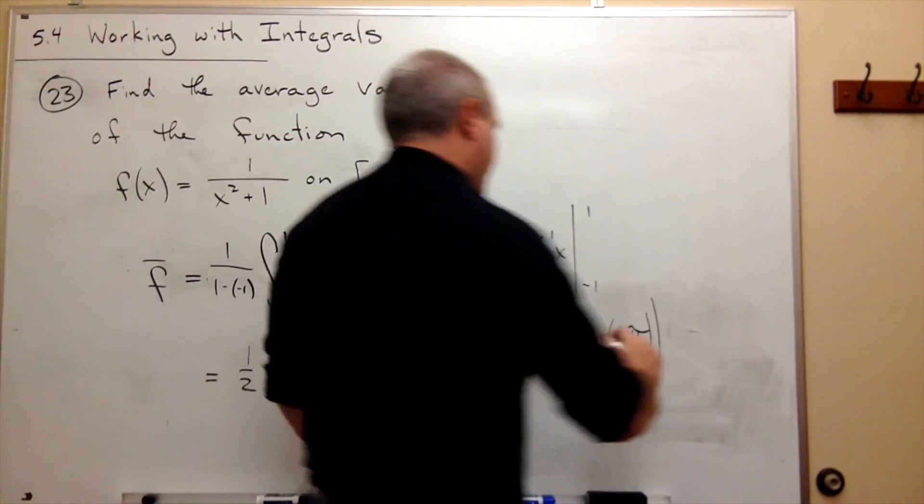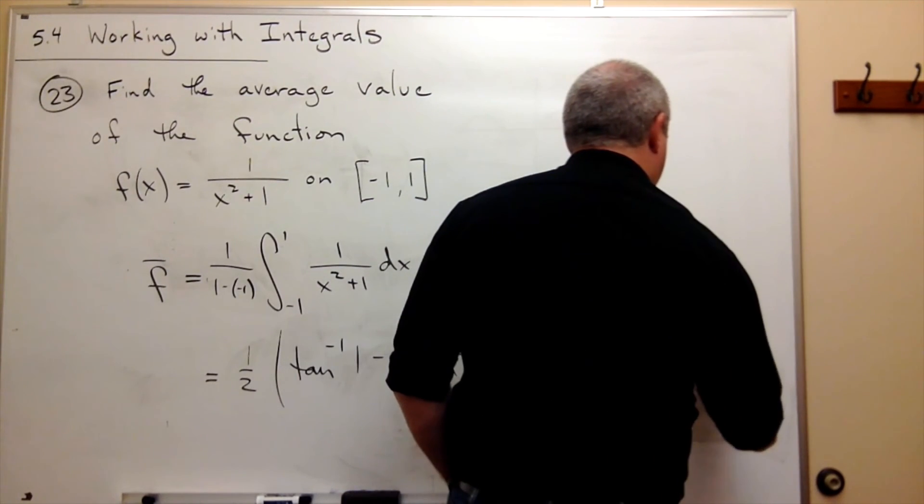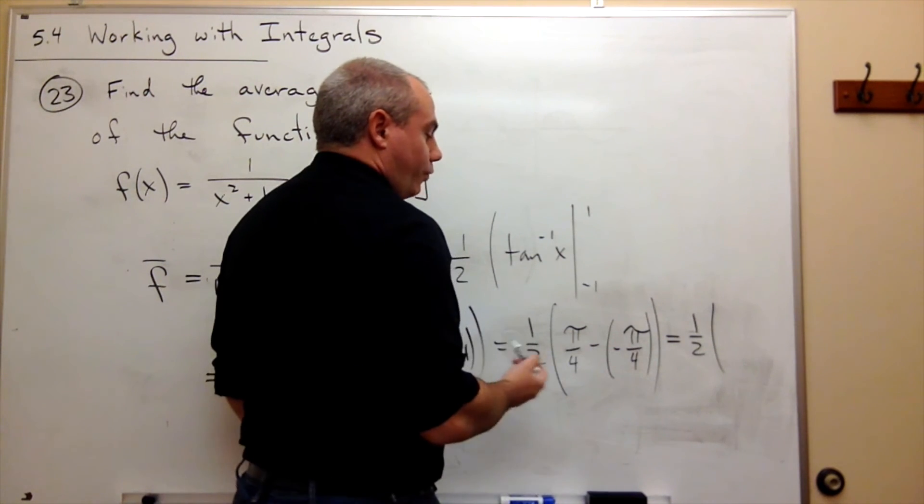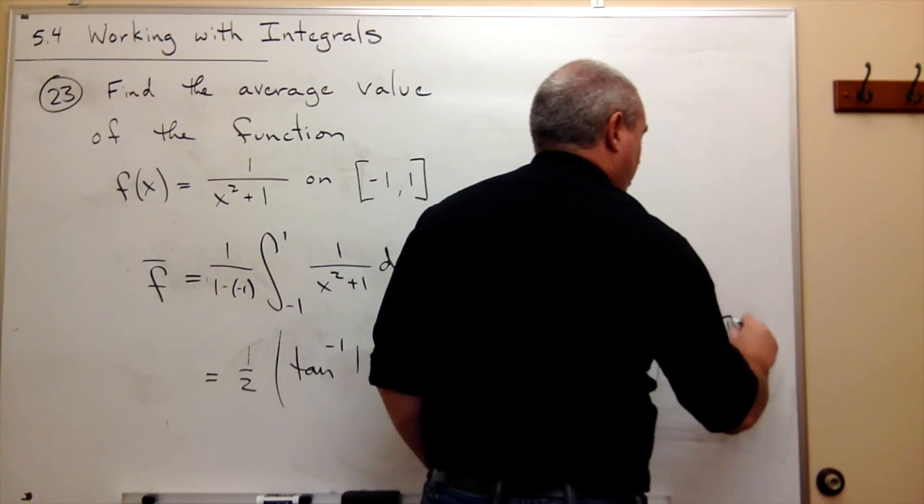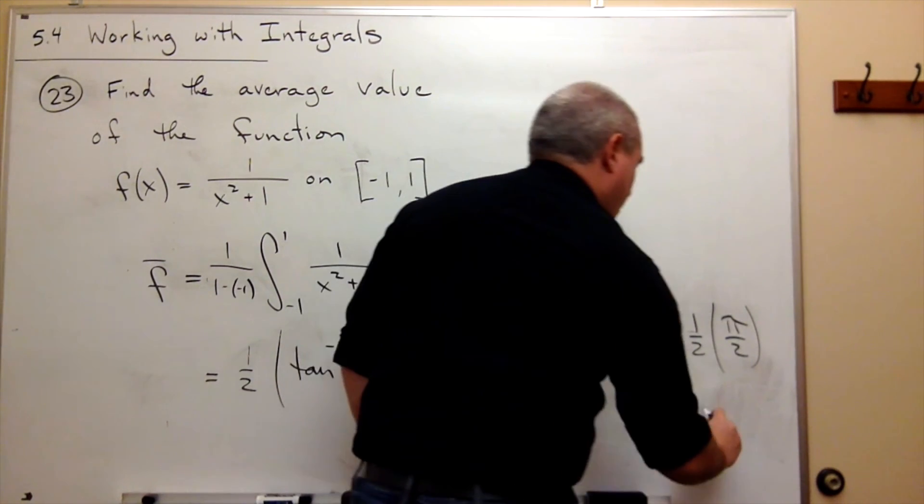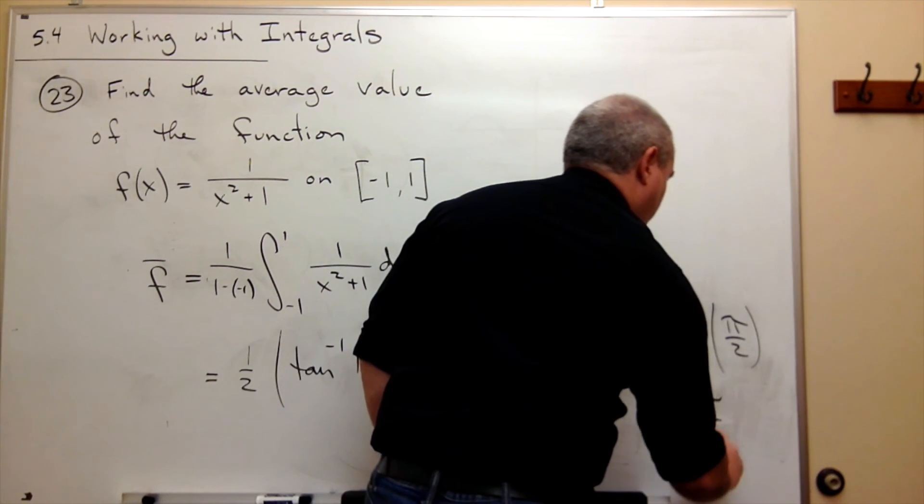And so what do we get out of this? We get 1 half times pi over 4 plus pi over 4, which is pi over 2. And so our answer would be pi over 4.